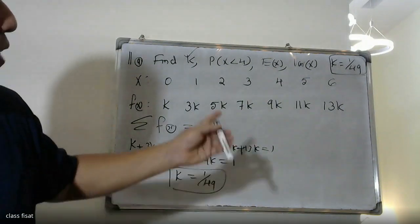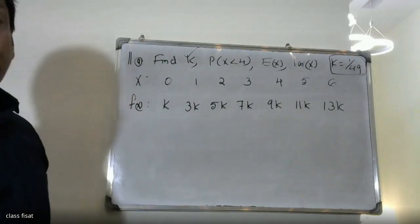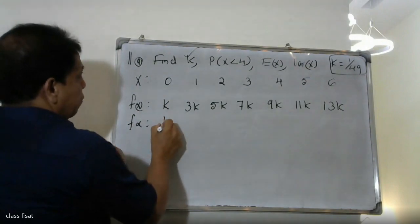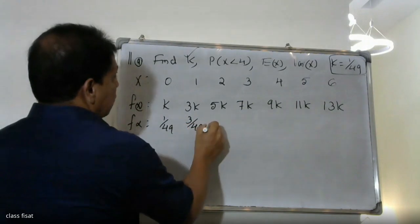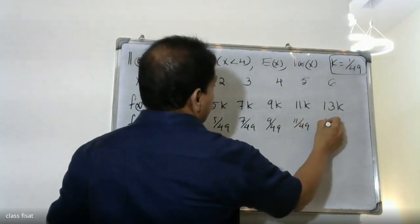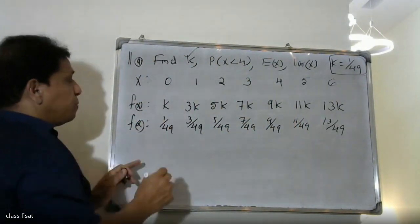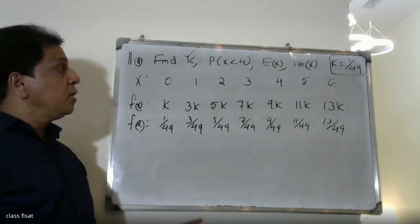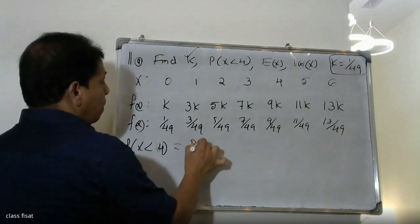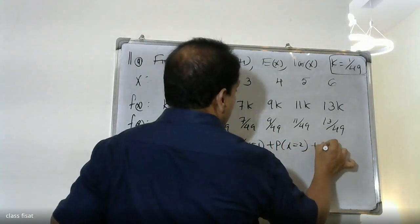Now, substituting k equals 1 by 49, the function f(x) becomes: 1/49, 3/49, 5/49, 7/49, 9/49, 11/49, 13/49. Then the probability of X less than 4 equals P(X=0) plus P(X=1) plus P(X=2) plus P(X=3).